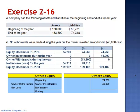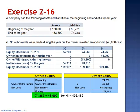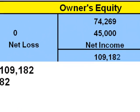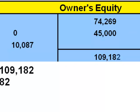The equation becomes $74,269 plus $45,000 in investments, plus net income equals $109,182. Combining $74,269 and $45,000 gives $119,269 plus net income equals $109,182. Subtracting $119,269 from each side gives net income of negative $10,087. So for this company, they did not have net income — instead they incurred a net loss equal to $10,087.